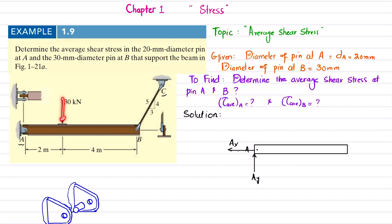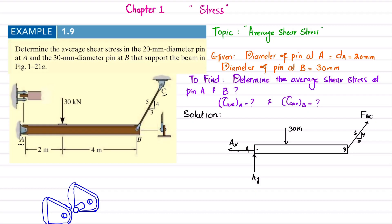Due to the applied load, there will be a tensile load in wire BC, and as a result wire BC exerts a force on the beam at point B, which we call FBC. The ratios given are: vertical is 4, horizontal is 3, and hypotenuse is 5. There is a point load of 30 kN at a distance of 2 meters from point A, and the remaining distance from the 30 kN load to point B is 4 meters.